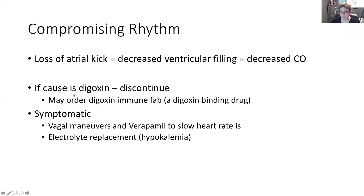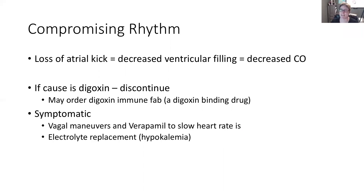If this is caused by digoxin, stop and get that Digibind — we want to bind the digoxin so it loses its efficacy in the body. If the patient is symptomatic, we may ask them to perform vagal maneuvers — bearing down — to see if we can convert the rhythm. We can also try verapamil to slow the heart rate down, and electrolyte replacement if they are hypokalemic.